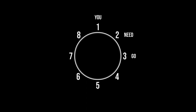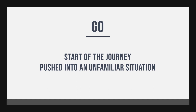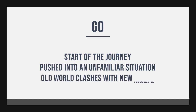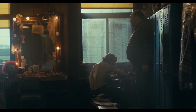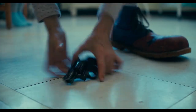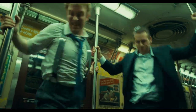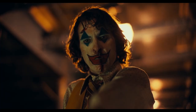Go — the start of the journey. The push out of the door into an unfamiliar situation. The adventure begins; we've seen the old world, now it clashes with the new world. The trigger for Arthur's journey is when his work colleague Randall hands him a gun for his protection. He accidentally reveals the gun during a children's performance and gets fired. This, along with another beating, pushes him over the edge. He kills three Wall Street guys. He's definitely in a whole new world now.